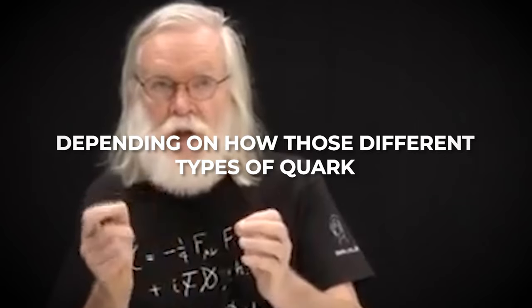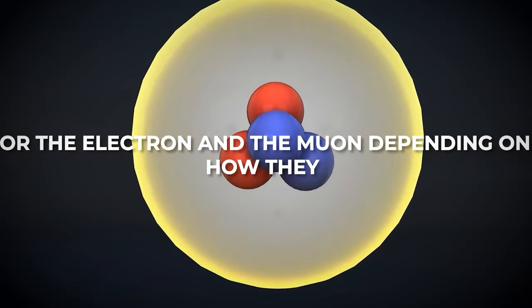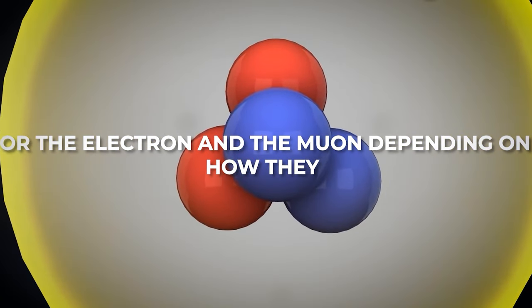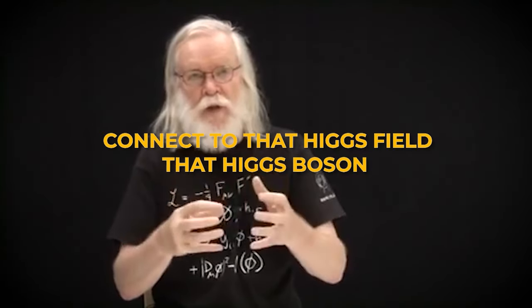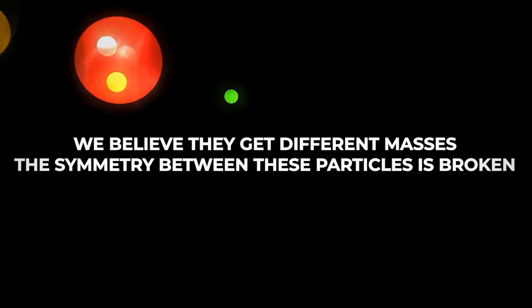Depending on how different types of quarks, or the electron and the muon, connect to that Higgs field, that Higgs boson, we believe they get different masses. The symmetry between these particles is broken.